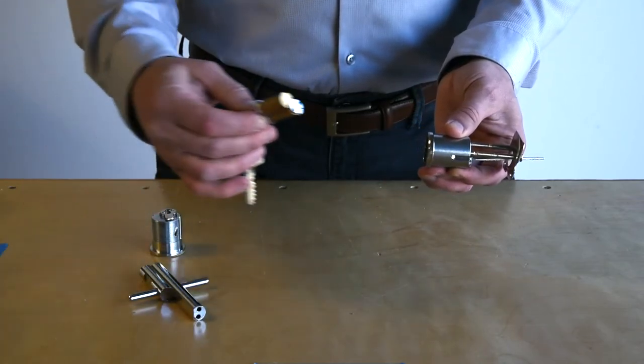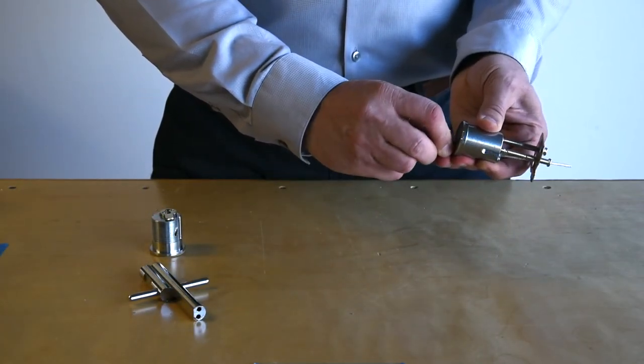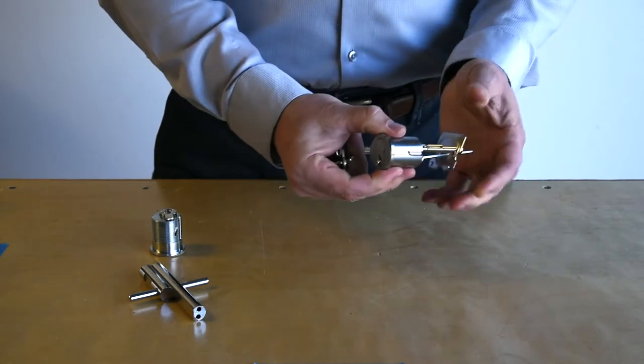And lastly, like the mortise cylinder, you would simply install your core and now your lock is ready for operation.